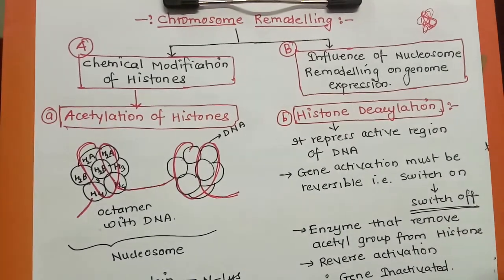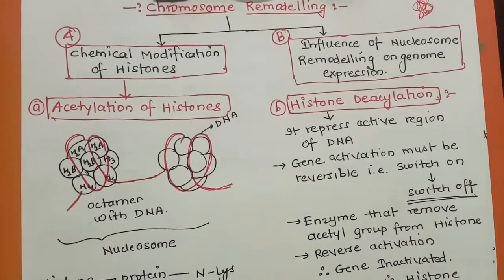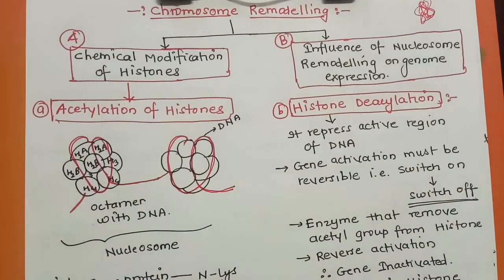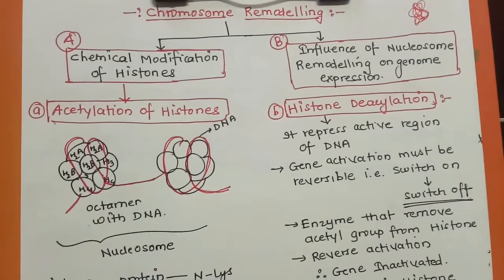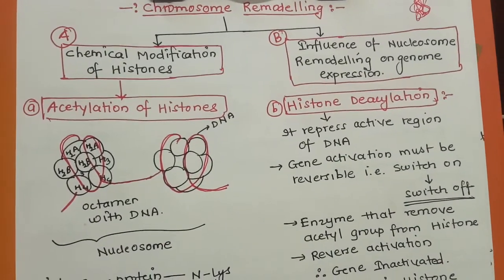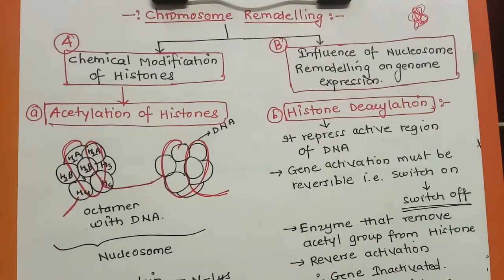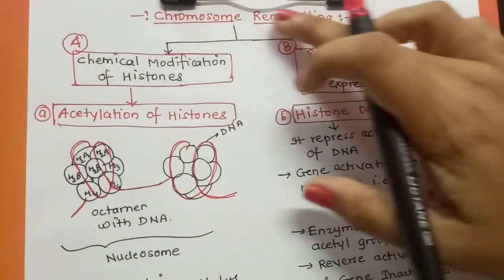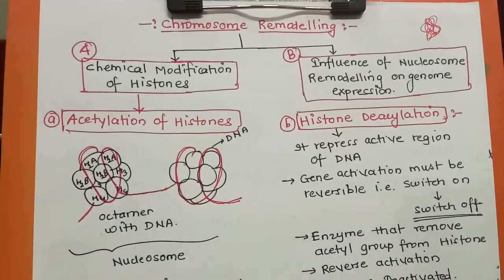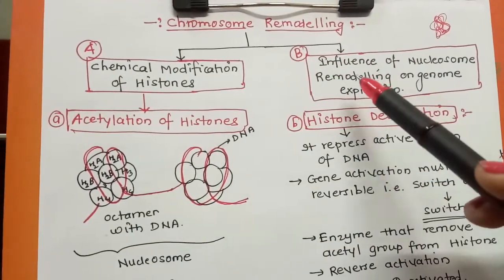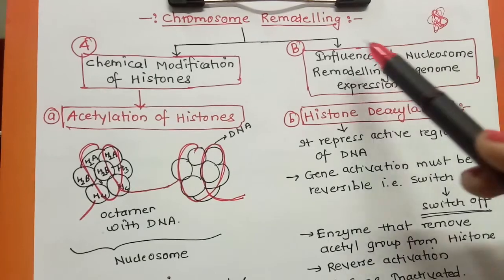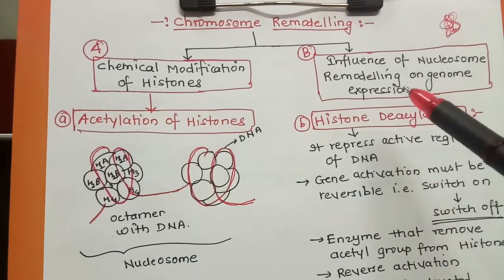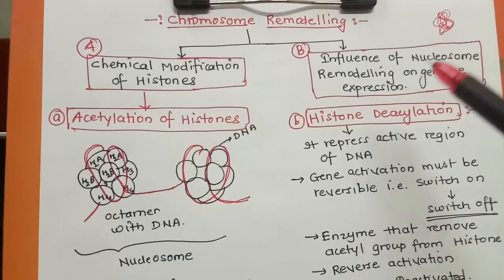Remodeling means we will either change the DNA structure or activate or deactivate the histone proteins attached to it, so that the gene is switched on or switched off depending upon the cell's requirement. Such an on-off mechanism, or activation-deactivation mechanism, we study under the heading chromosome remodeling. In two ways we can do chromosome remodeling - there are also other techniques to activate or deactivate genes.